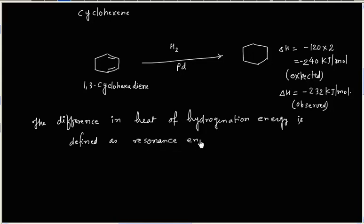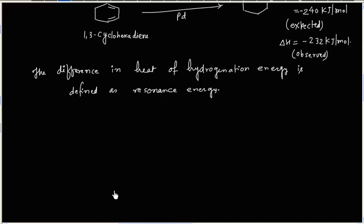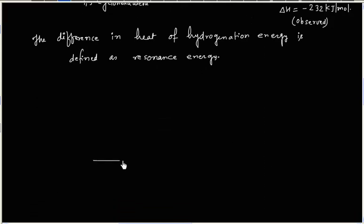The difference in heat of hydrogenation energy is defined as resonance energy. We can plot potential energy diagram for resonance energy. On y-axis, we have potential energy.